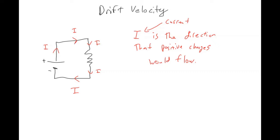Now we know that assumption was incorrect, and that what is actually moving are negative charges called electrons. The things actually moving in your circuit are electrons, and they move in the opposite direction of the current.